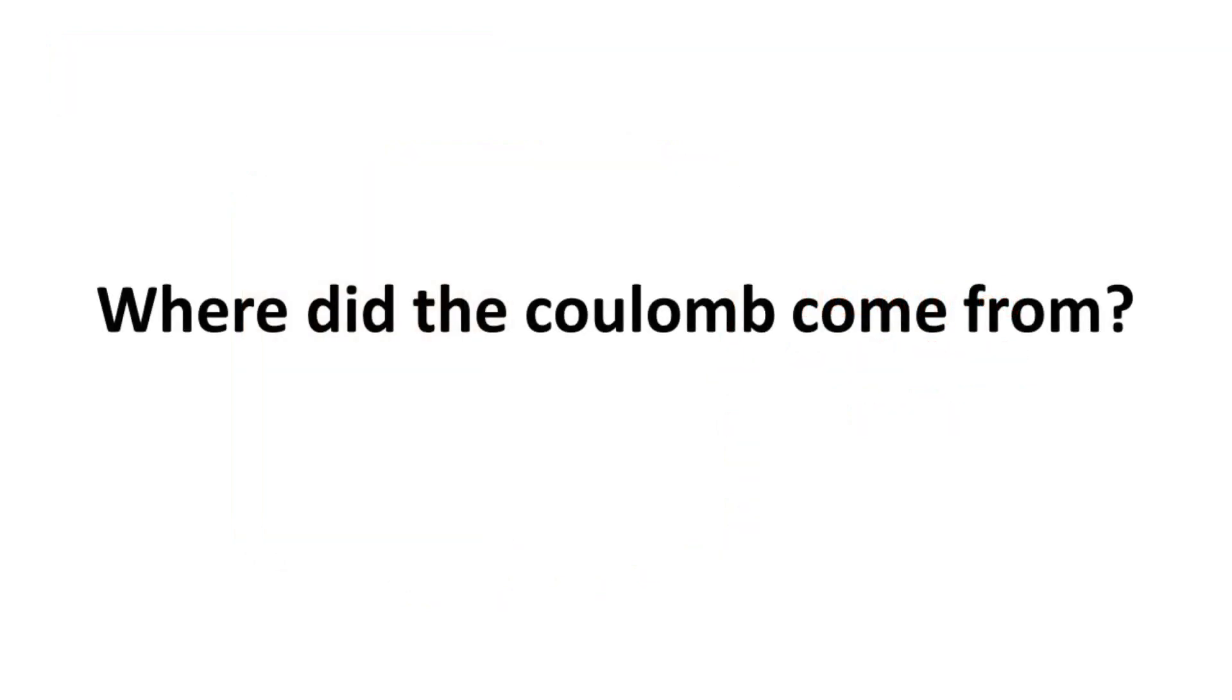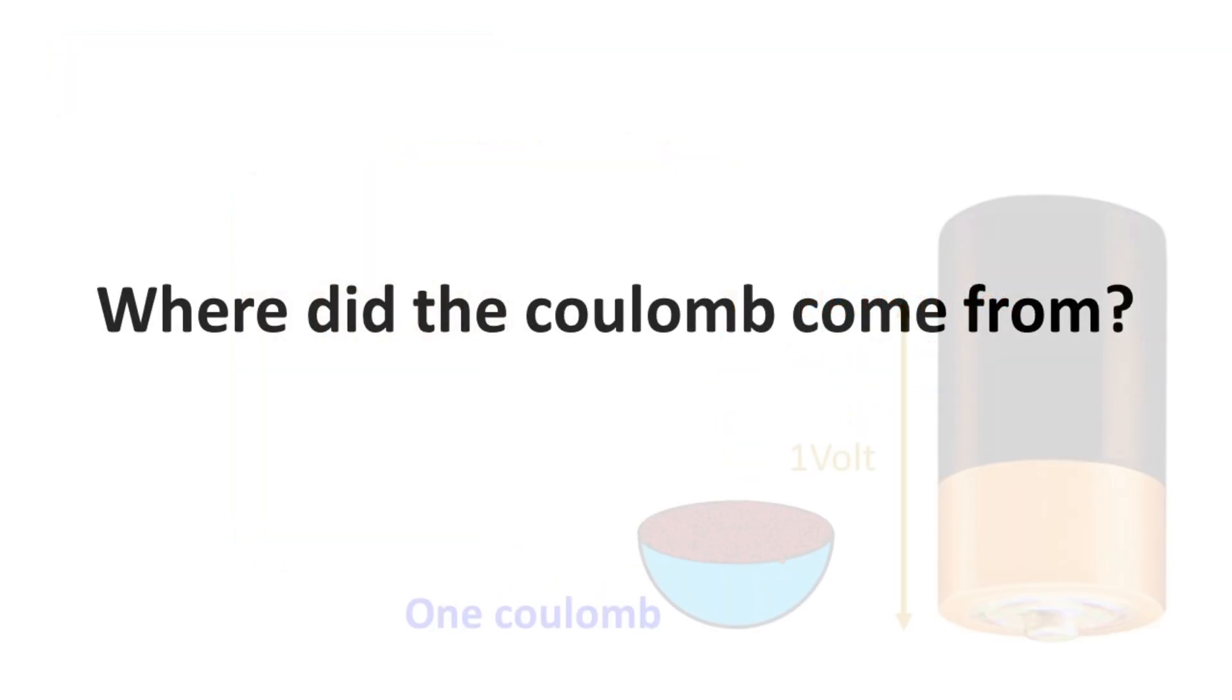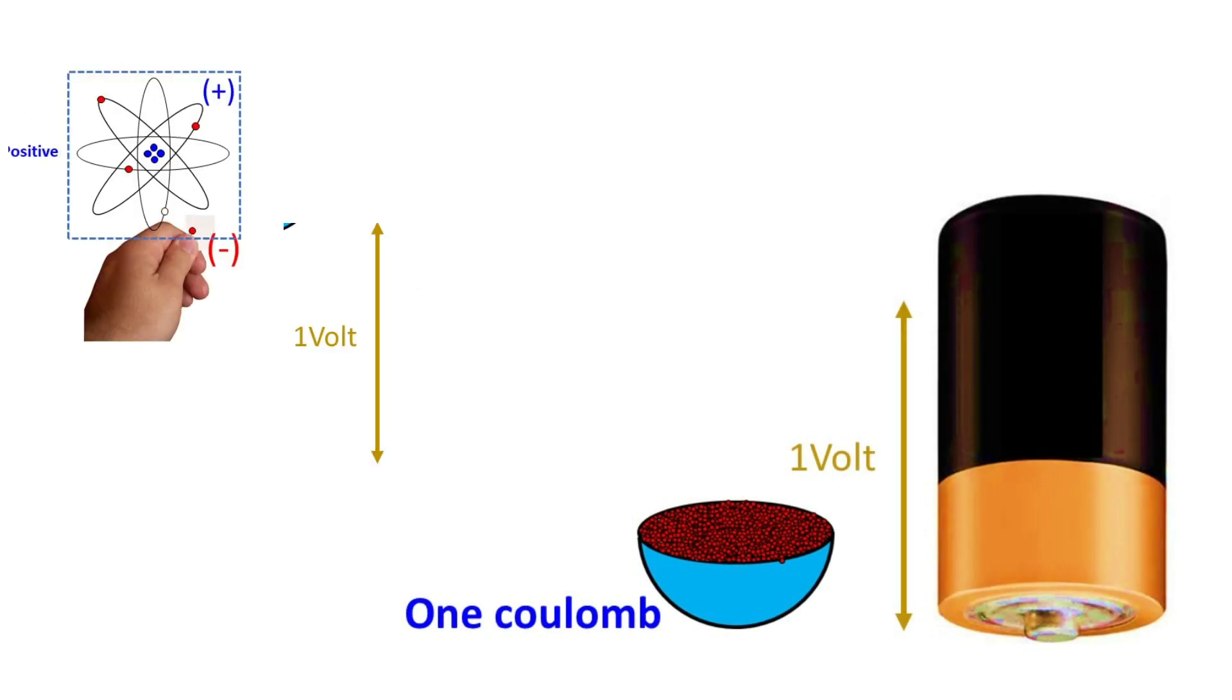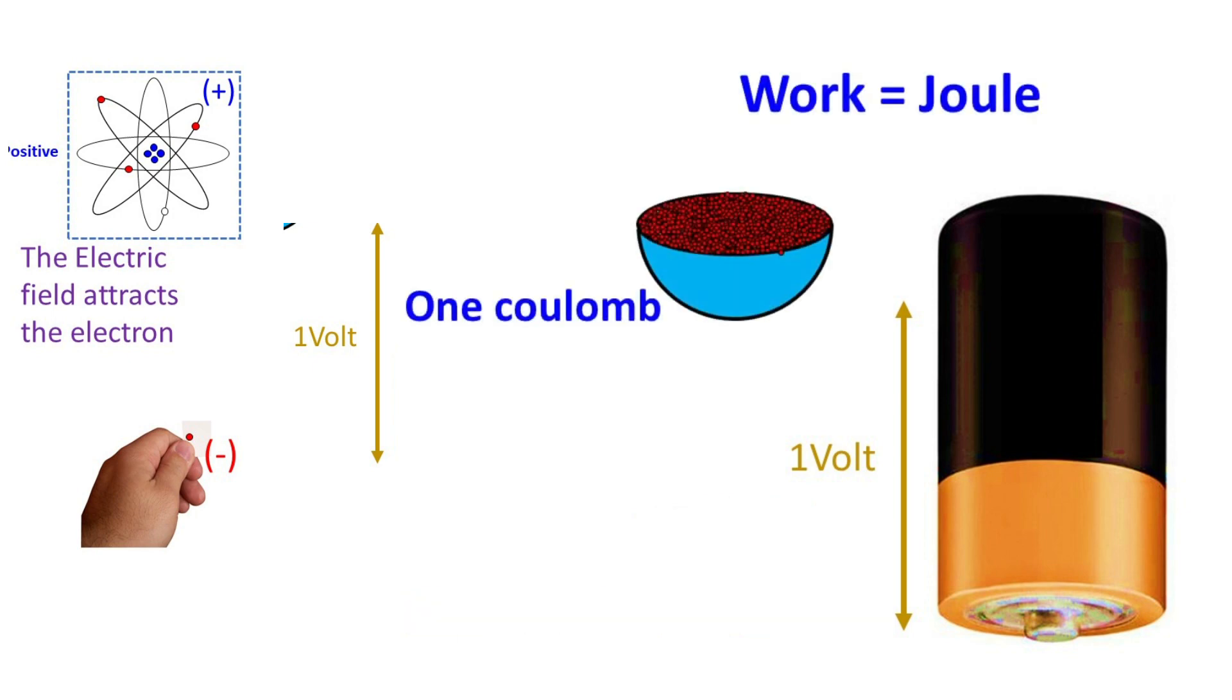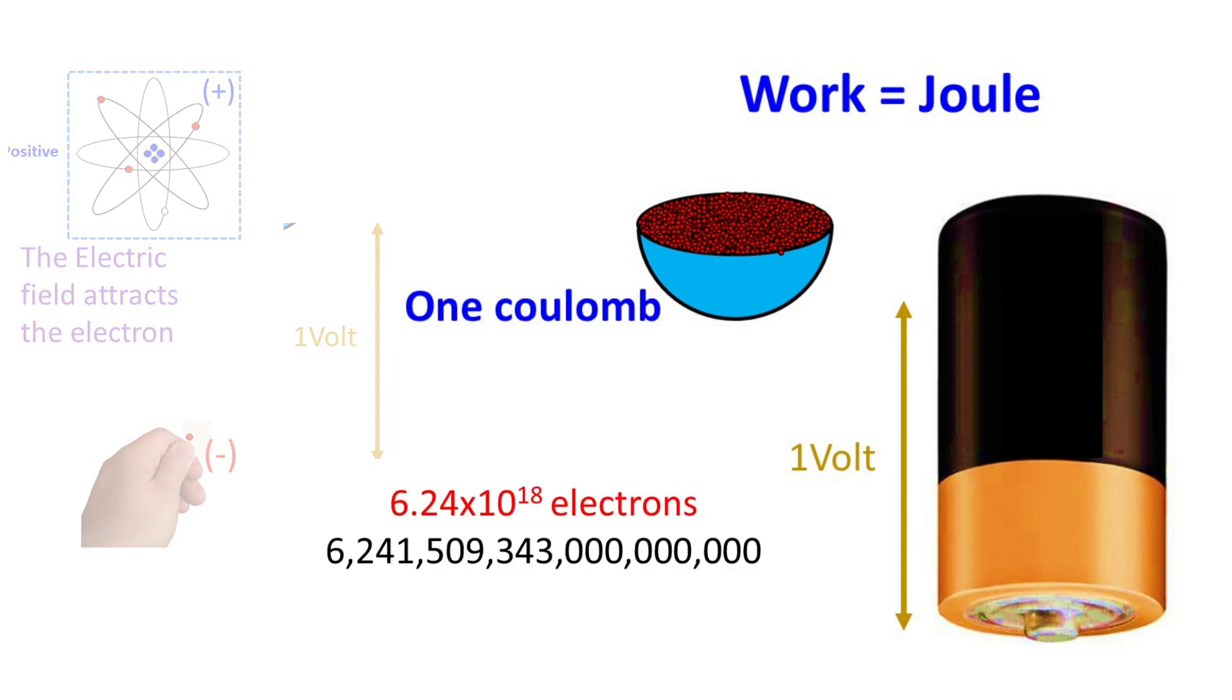Where did the coulomb come from? Rising the electron to a certain voltage takes work. Due to the need to measure it, the coulomb was invented. One coulomb is that exact number of electrons that, when raised to 1 volt, it is doing 1 joule of work.